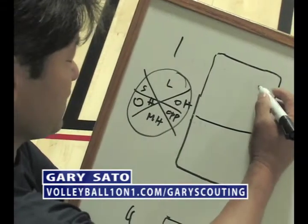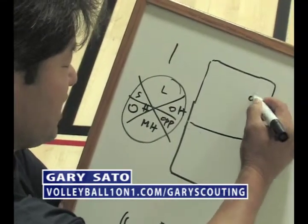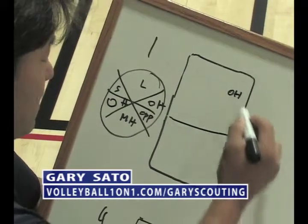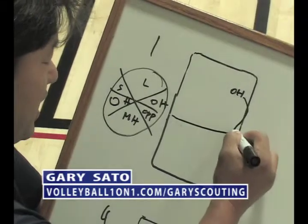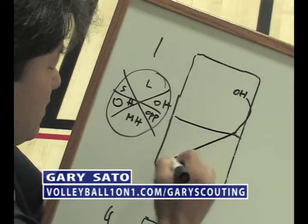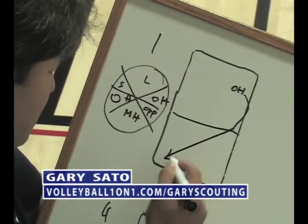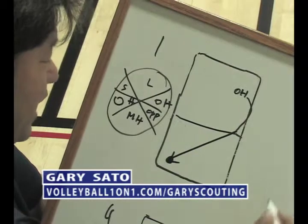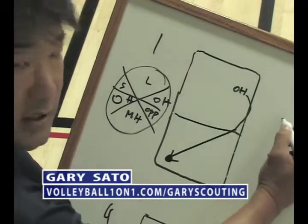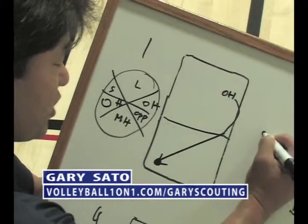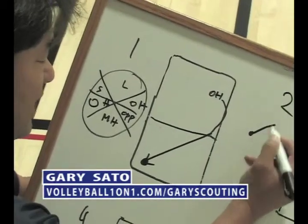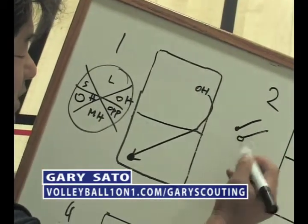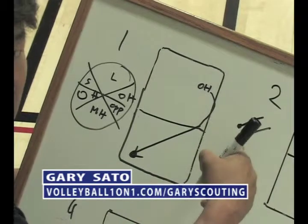So for instance, say if this outside hitter here gets set a ball here and they hit cross-angle, I'll put it down like that. I might even put a dot. So the key for this is a circle — like that means a kill, like that means it got dug.